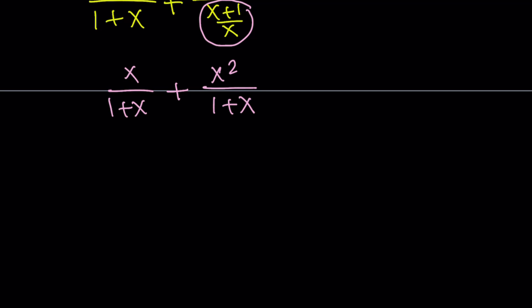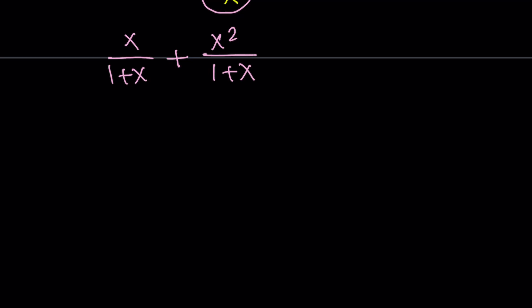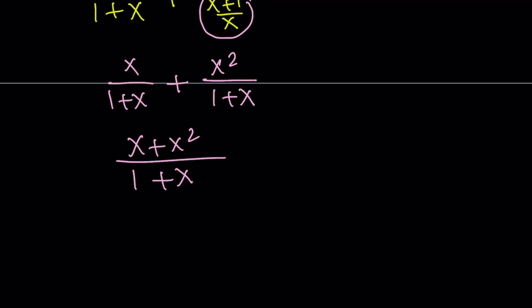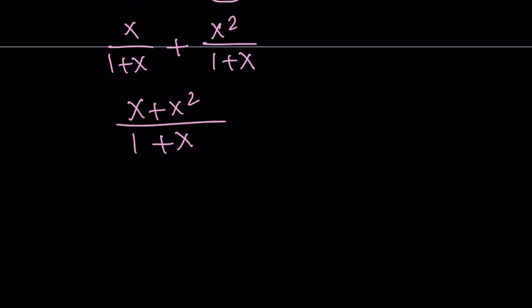Well, we already have a common denominator so you could just add the numerators. And you get from here x plus x squared divided by 1 plus x. Obviously, x should not be 0 here. Otherwise, we're going to run into problems. First of all, x to the power of negative 1 is not going to be a real number. Or it's not going to be well defined.